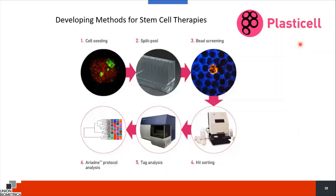Some companies are already using our technologies. One example from the United Kingdom is a company called PlastiCell, which optimizes conditions for cell clusters and organoids. They use a special split-pool approach to barcode each cell cluster and test thousands of conditions — which growth factor to add, for how long, and when a second one needs to be added. They use a large particle flow cytometer to sort cell clusters that differentiated into a certain stage, then break them down into single cells and do TAC analysis to identify which condition worked best. This approach can also be applied for TAC screening and drug screening.